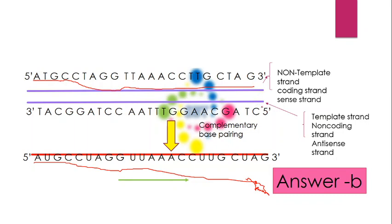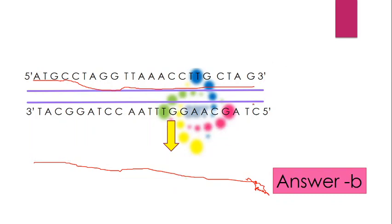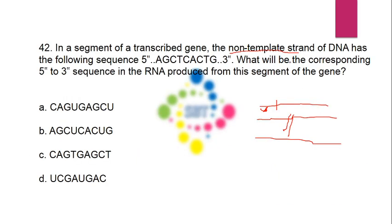So what will be the correct RNA sequence option? Since the non-template (coding) strand has a similar sequence to RNA with T replaced by U, we simply identify which option matches. The sequence AA appears in only one place, which is option B. Therefore the correct answer is option B.